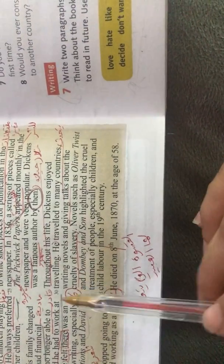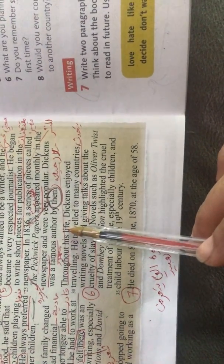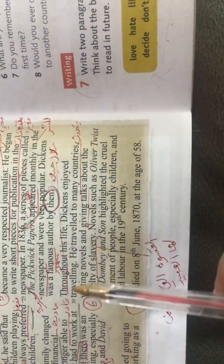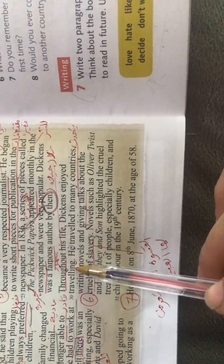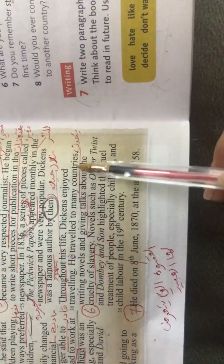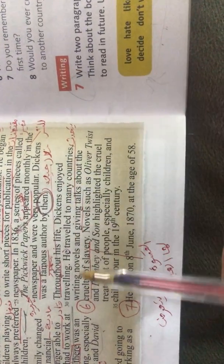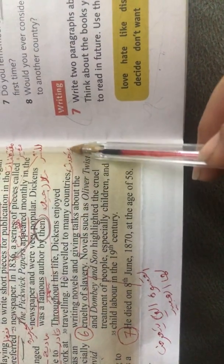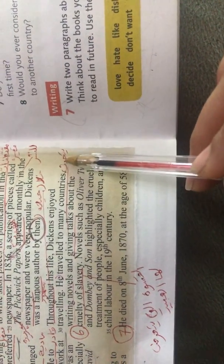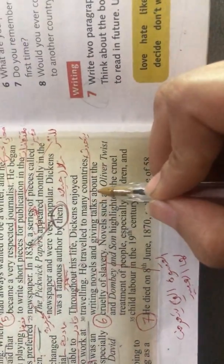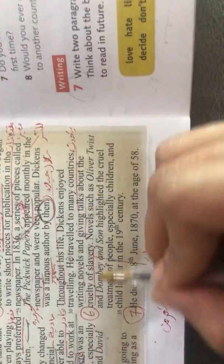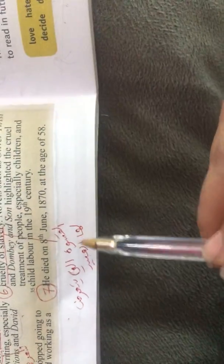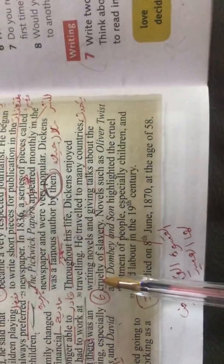Paragraph number six. Throughout his life, من خلال حياته ومسيرته المهنية. Dickens enjoyed traveling. He traveled to many countries, كان يسافر لعدة دول. He was writing novels and giving talks. Giving talks يعني كان يعطي speech. يعطي محاضرات أو يتحدث about the cruelty of slavery. Cruelty of slavery, it means القسوة التي يتعرض لها العبير. Cruelty, قسوة. Slavery, اللي هم العبيد.